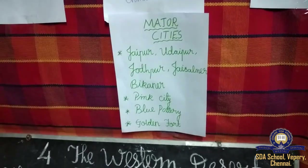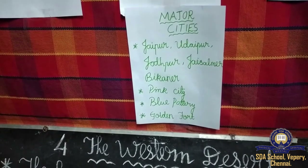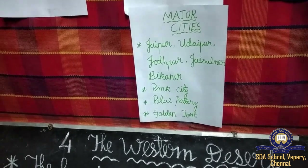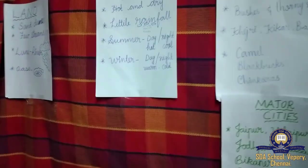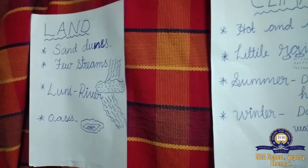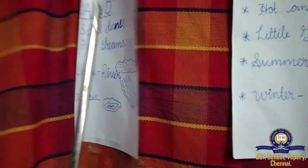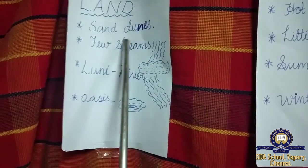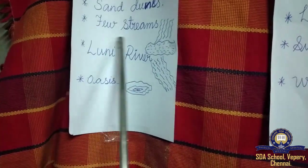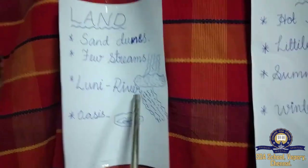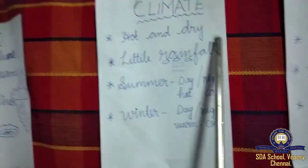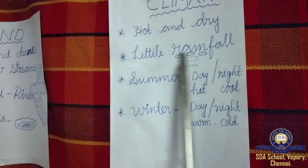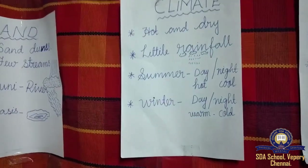Let us revise the lesson. Regarding the land: it is full of dry sand forming sand dunes; there are few streams with little water; and there is a small river called Luni. There are also oases in the desert. The climate is very hot and dry, with little rainfall sometimes.